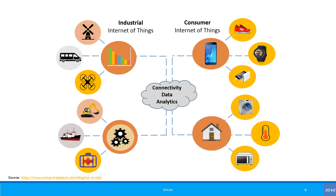IIoT also uses more sensitive and precise sensors, including more location-aware technologies. Some examples include drones to monitor oil pipelines, sensors to monitor smart factories, drilling equipment, excavators, earth movers, tractors, sprayers, and agriculture. Smart cities may be a mix of commercial IoT and IIoT.